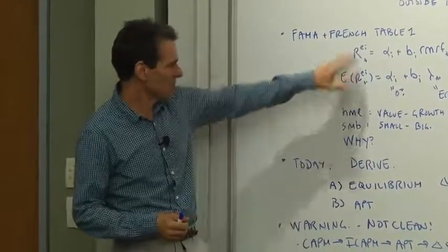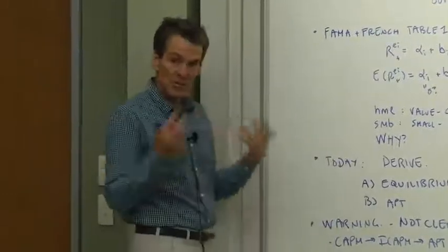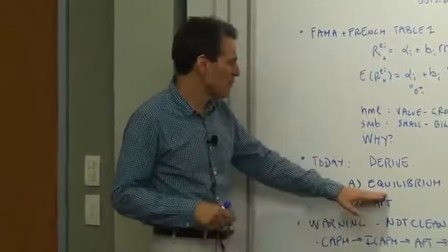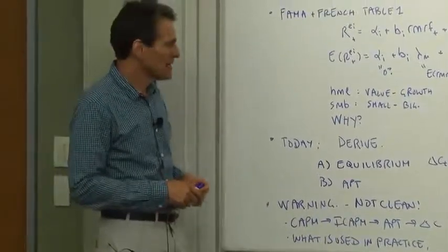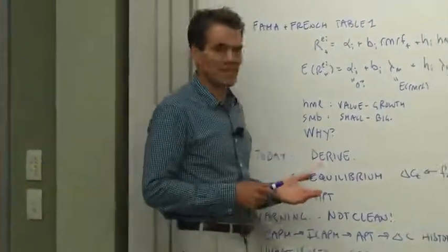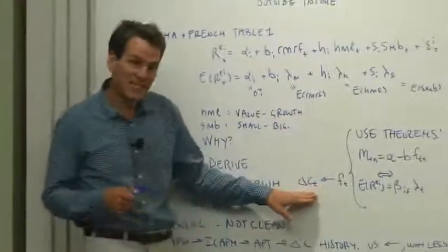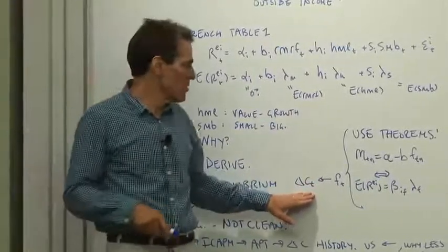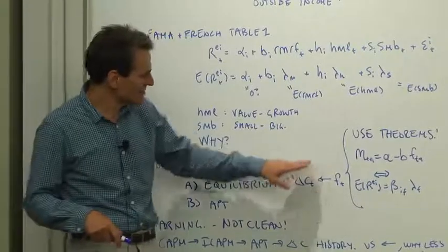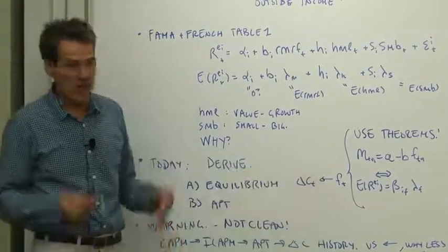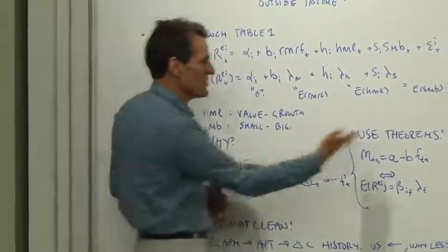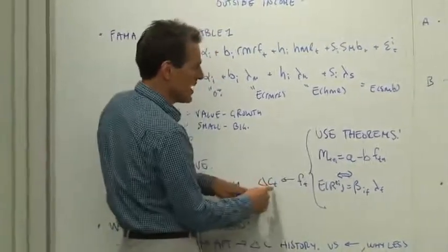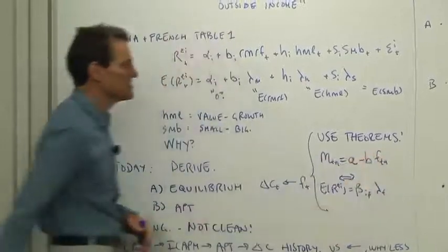We're going to derive models of this sort. I'm going to use two kinds of logic: equilibrium logic and arbitrage pricing theory logic. The equilibrium logic is quite straightforward. It's all going to be still the consumption-based model, but what we're going to do is decide we don't want to use consumption. Maybe it's badly measured, maybe we don't want to use consumption. So we're going to use theories to substitute out for consumption in terms of decision determinants or other things that might be correlated with consumption.